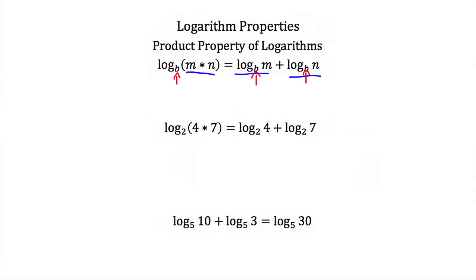For example, if we had the log base two of four times seven, this would be equal to the log of four plus the log of seven, as long as we have the same base — in this case two.